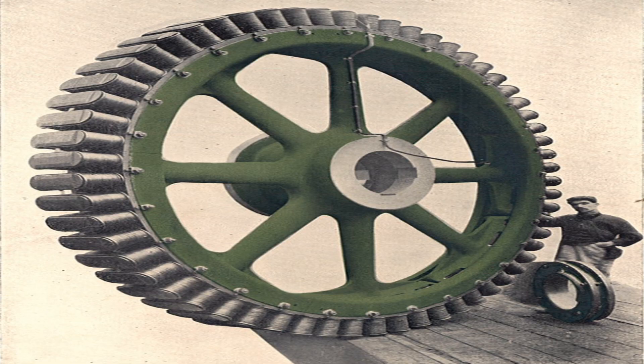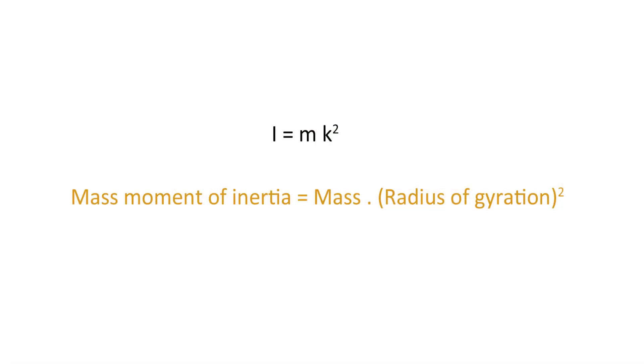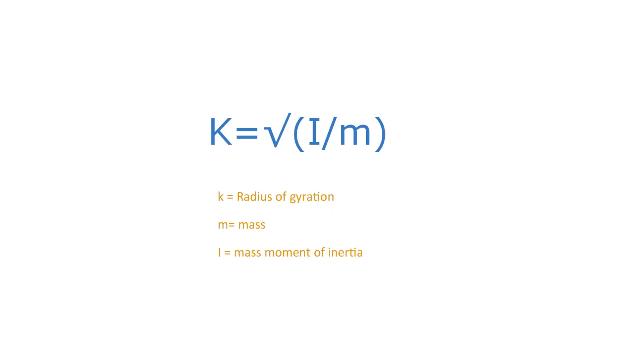In mass moment of inertia, I equals mass times the square of radius of gyration. From this equation we can derive the radius of gyration: K equals the square root of I divided by m, which represents mass moment of inertia by mass.